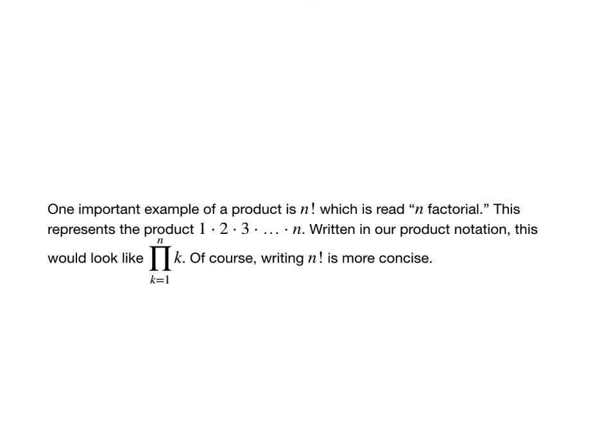Now one important example of a product of a sequence is n factorial. That's written as n with an exclamation point after it. This represents the product 1 times 2 times 3 all the way up to n. Written in product notation, this is going to look like the product as k goes from 1 to n of k.